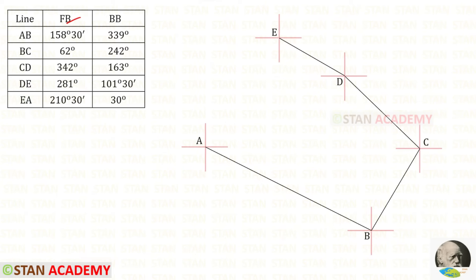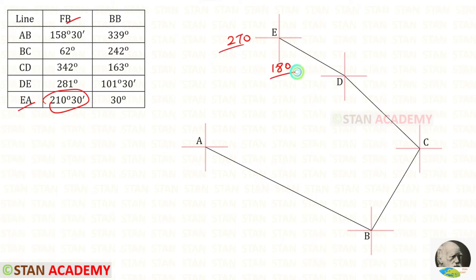The fore bearing of EA is 210 degrees 30 minutes. Here we have 180 and here 270 degrees, and since 210 comes between 180 and 270, we make a line between them and join the point A.